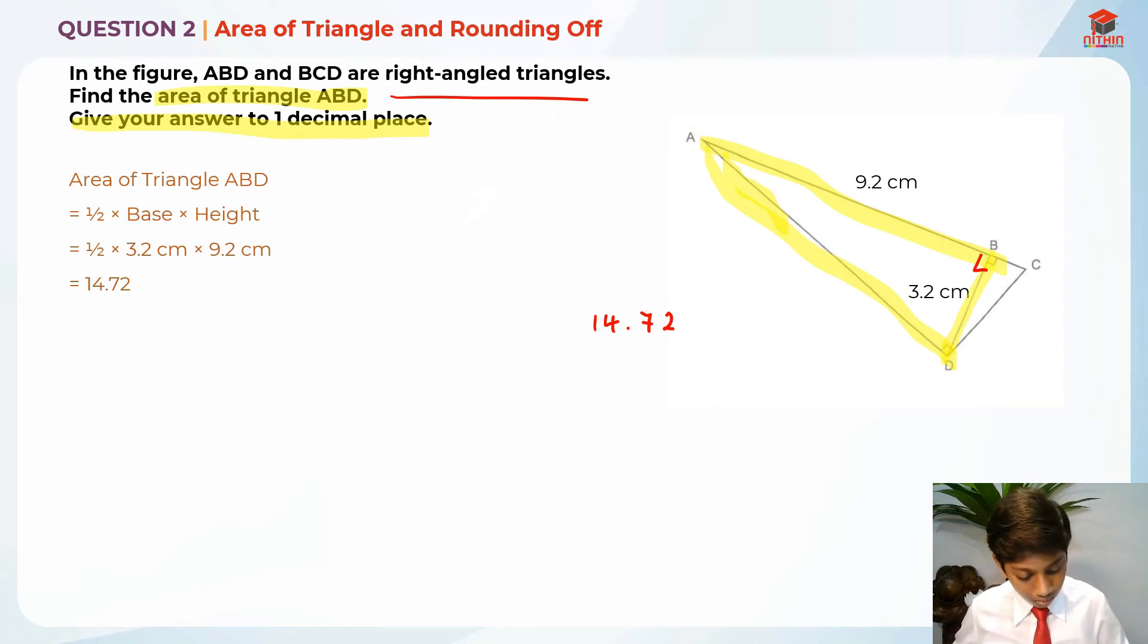I think I did it the other way around. So we need to look at 7 and 2. So is 2 higher than 5 or lesser than 5? It's lesser than 5. So actually 7 does not increase by 1. It remains the same. And the 2 goes away. So it's actually 14.70.